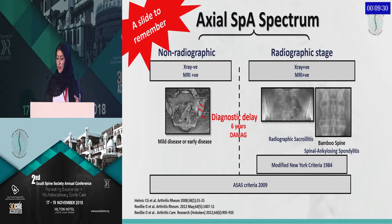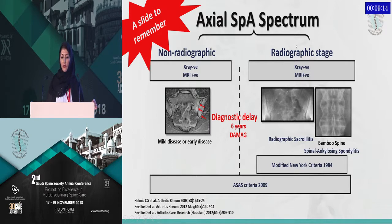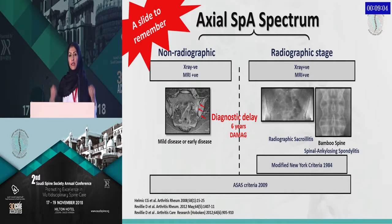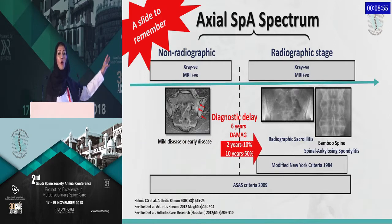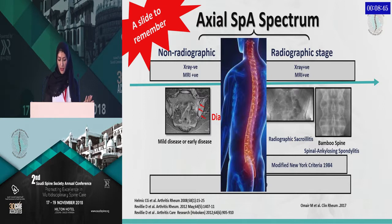The spectrum of spondyloarthropathy is divided into two: non-radiographic spondyloarthropathy and the radiographic stage. Non-radiographic changes are MRI positive and X-ray negative, while radiographic changes are X-ray positive and MRI positive as well. As Dr. Ziyad mentioned, we have a diagnostic delay — including in the Kingdom — it can take up to six years for a patient to reach rheumatology. Within two years, 10% of patients will develop X-ray findings, i.e., damage, and within 10 years, 50% will already have developed these changes.